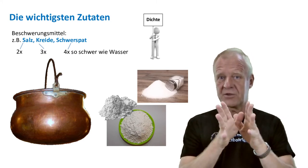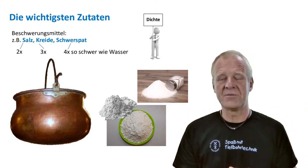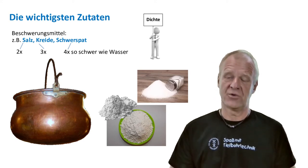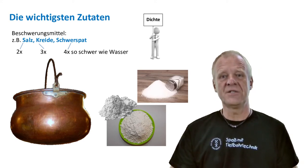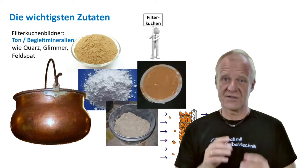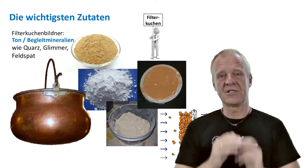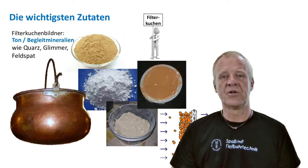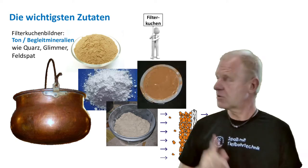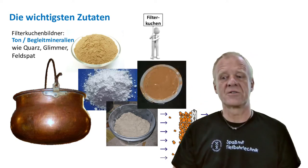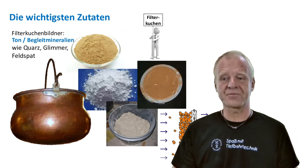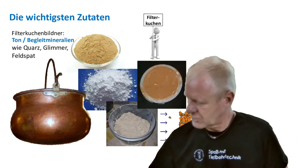However, this results in a situation where we lose some drilling mud into the surrounding formation, which is bad. Therefore we have to add some further ingredients to our mud to help quickly build a tight filter cake at the borehole wall. These filter cake builders are minerals of different grain sizes, composed in a way that smaller particles fit into the gaps between the larger particles, so as to form an impermeable filter cake on the inside of the borehole to prevent further loss of drilling mud into the formation.